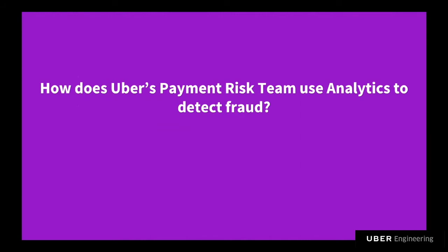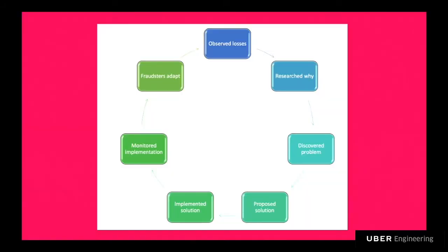Today we're going to be discussing the question of how does Uber's payment risk team use analytics to detect fraud? Basically, we have analytics that empower our dashboards, so when there is a loss, we immediately observe these loss trends. We look at what is going on in our system, find the problem, and come up with solutions by collaborating with engineers. We roll out the solutions, monitor them, and they generally have very good impact and stop the fraudsters. However, these fraudsters are very smart, very technologically advanced, and they adapt, and then the cycle starts all over again.